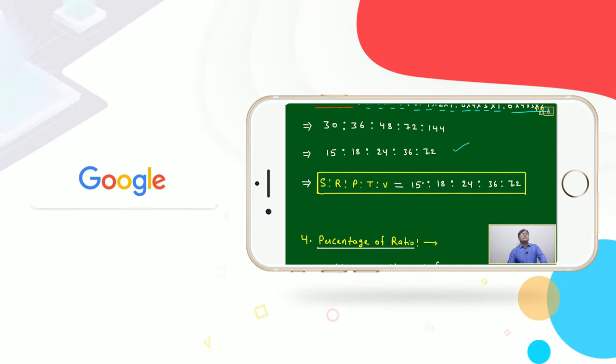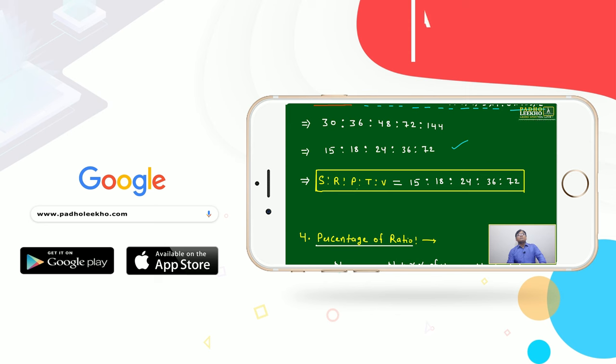This means the ratio between Soham, Ramesh, Pradeep, Tarun and Vijay will equal to 15:18:24:36:72.